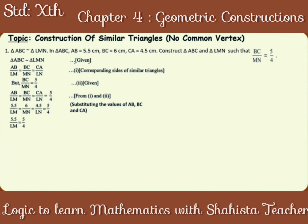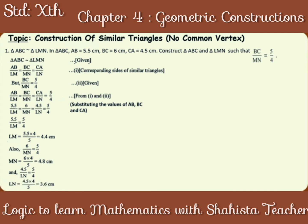So, 5.5 upon LM is equal to 5 by 4. Therefore, LM is equal to 5.5 into 4 upon 5, which is equal to 4.4 cm. Also, 6 upon MN is equal to 5 by 4. Therefore, MN is equal to 6 into 4 upon 5, which is 4.8 cm. And 4.5 upon LN is equal to 5 by 4. Therefore, LN is equal to 4.5 into 4 upon 5, which is equal to 3.6 cm.